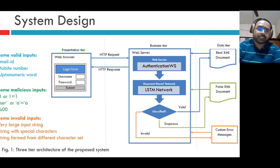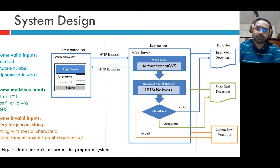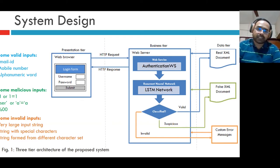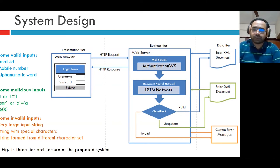On the left-hand side, valid inputs are specified — email ID, mobile number, and alphanumeric inputs. Some malicious inputs are also specified, such as '1 or 1=1' and similar. Invalid inputs include very large input strings, strings with special characters, and strings formatted from different character sets. When invalid inputs are entered, they generate error messages. Note that even error messages can disclose a lot of information — for example, which operating system is used, what version — which helps the hacker identify loopholes. To hide this information, you can use custom error messages.